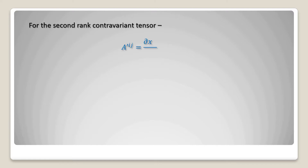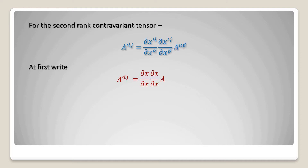For the second rank contravariant tensor, a prime upper suffix ij equal to del x prime i divided by del x alpha into del x prime j divided by del x beta into a alpha beta. First write a prime ij equal to del x by del x into del x by del x into a — we have to write del x by del x two times because the rank of the contravariant tensor is 2.